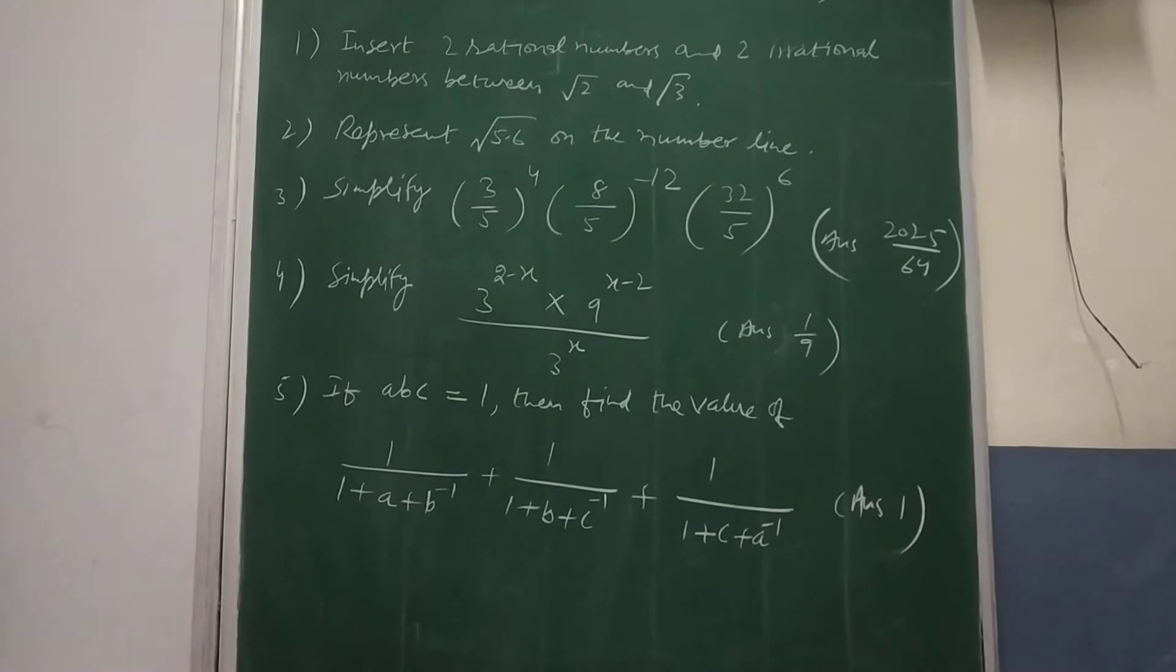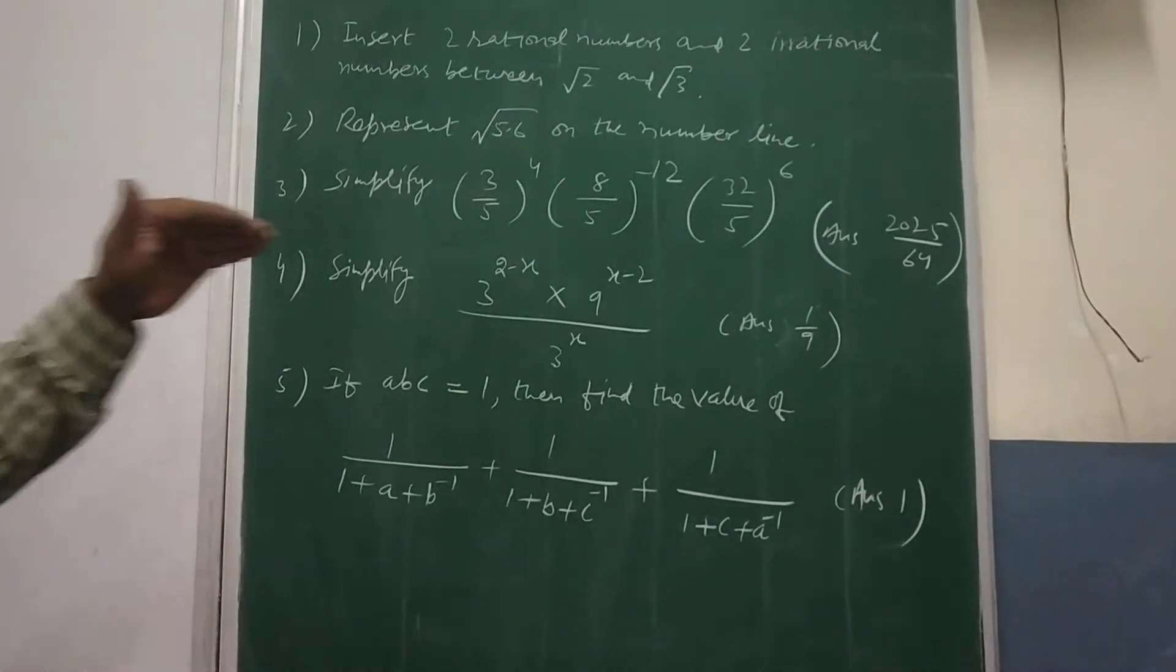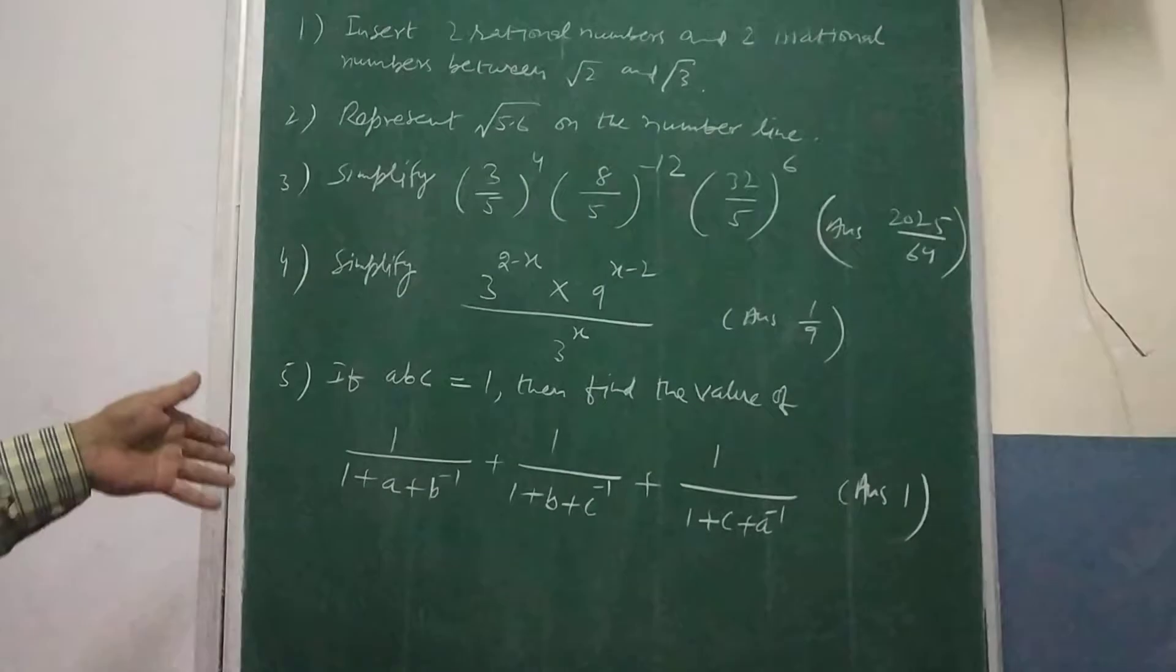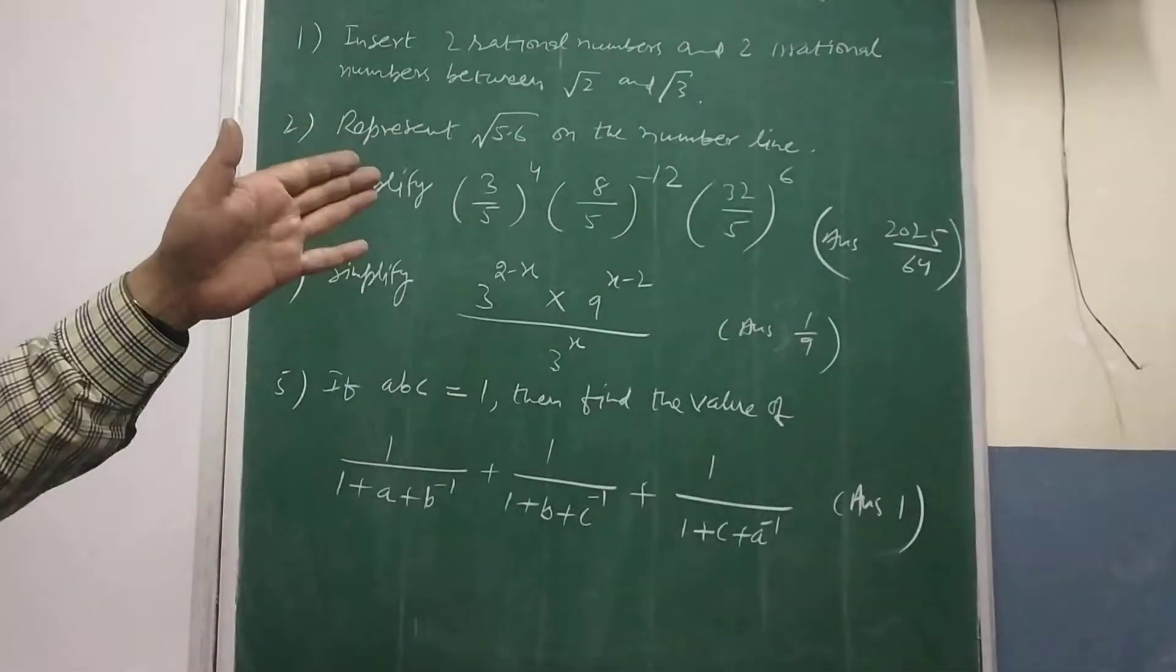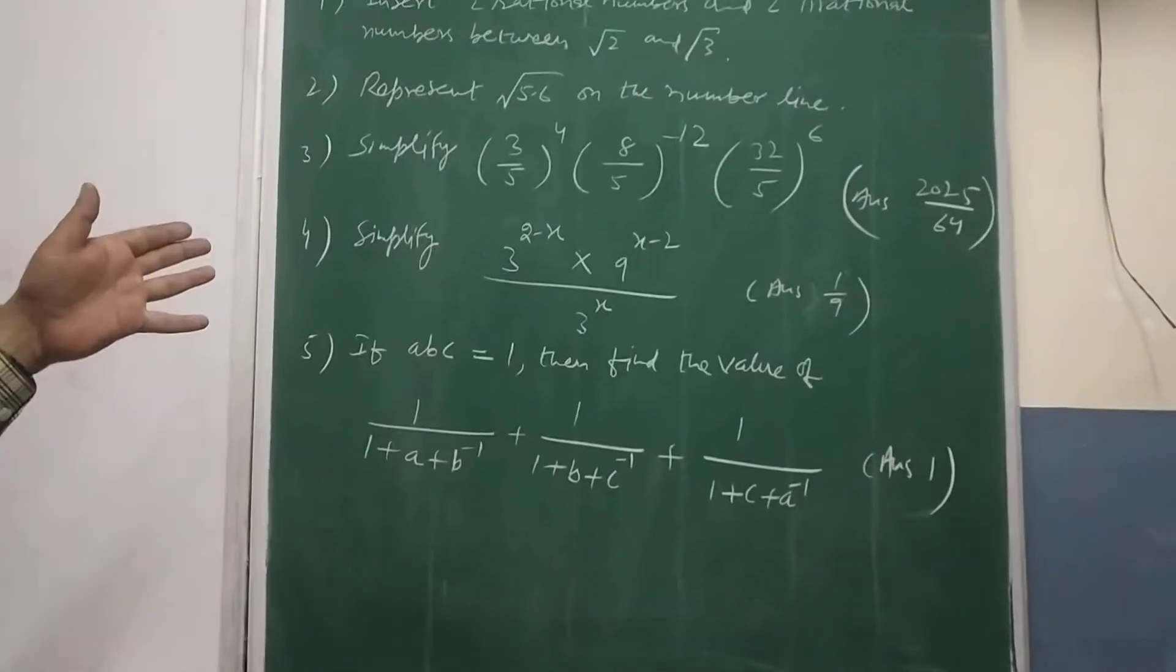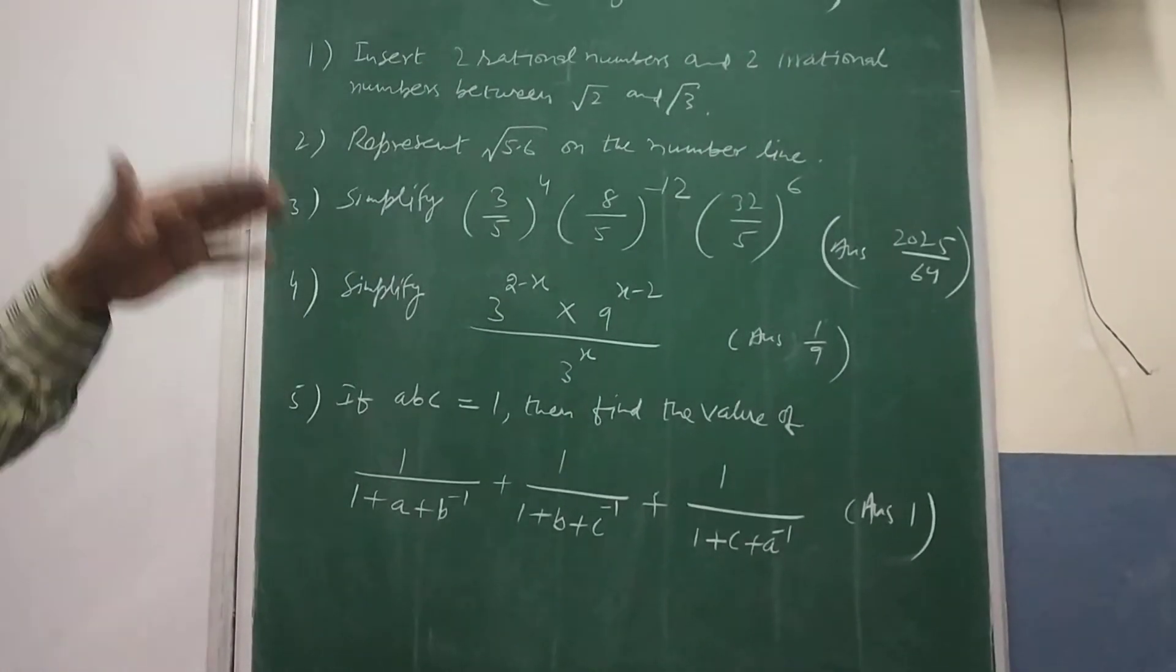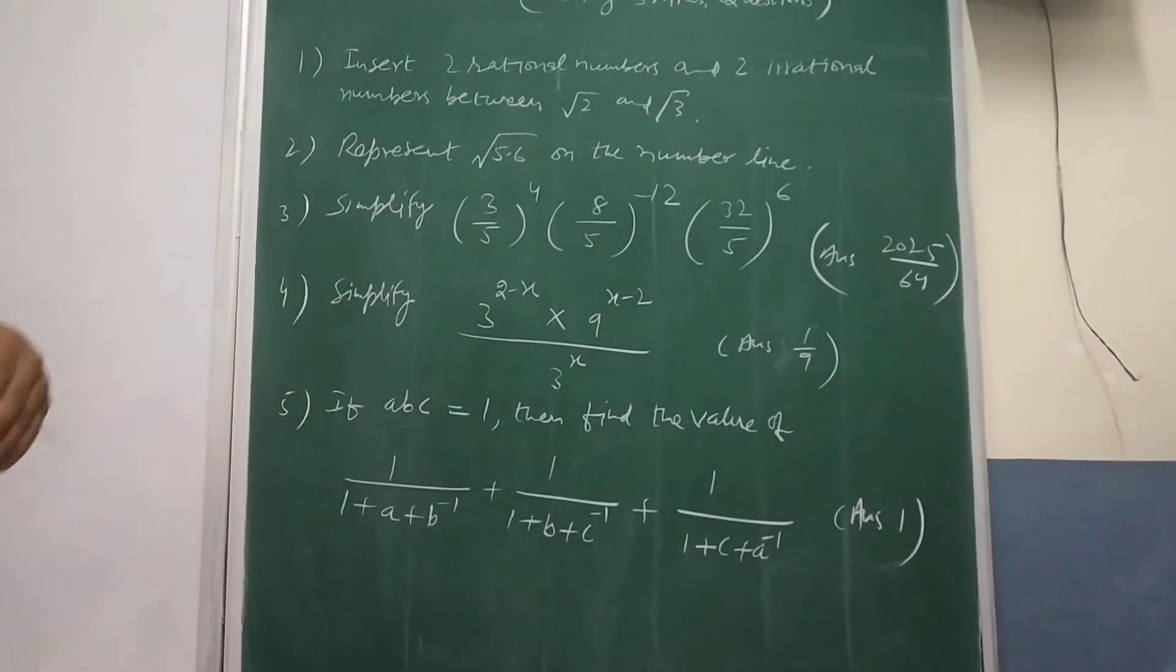So you know the procedure that was taught to you. Take any line and then you have to draw this 5.6 the length then you have to extend it by one unit and then find the bisector of that then you have to draw the semicircle and perpendicular you need to draw procedure.